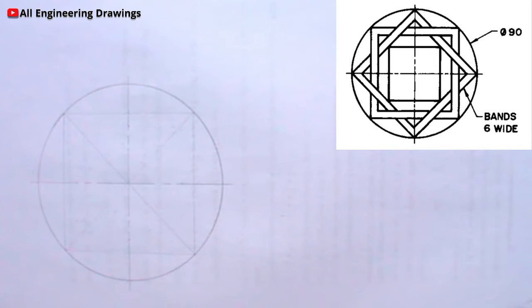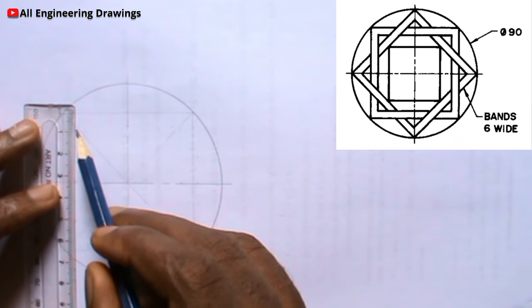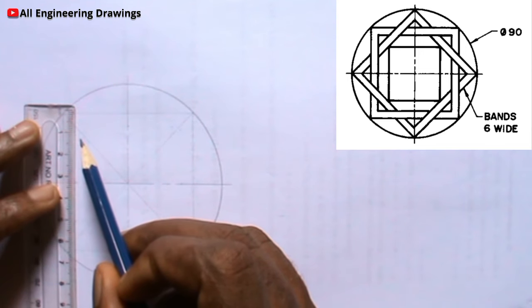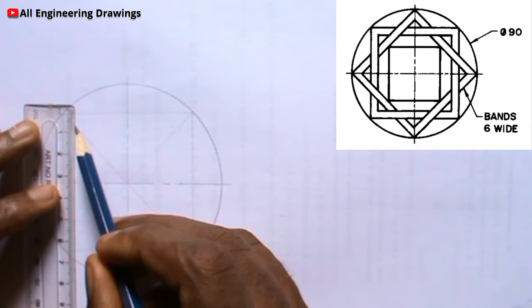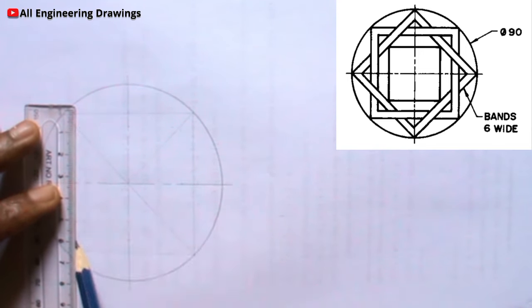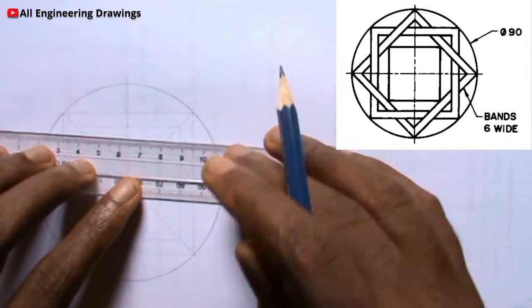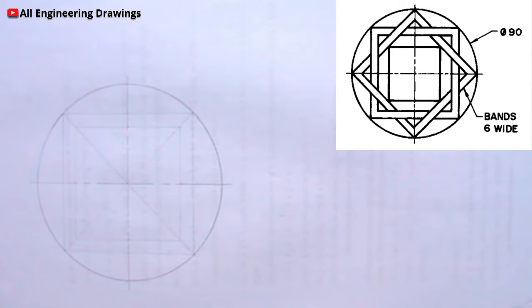After marking 6 millimeter from the line, we produce the parallel lines. The lines should start from the 45-degree line and stop at it. Remember that the lines should also be faint.